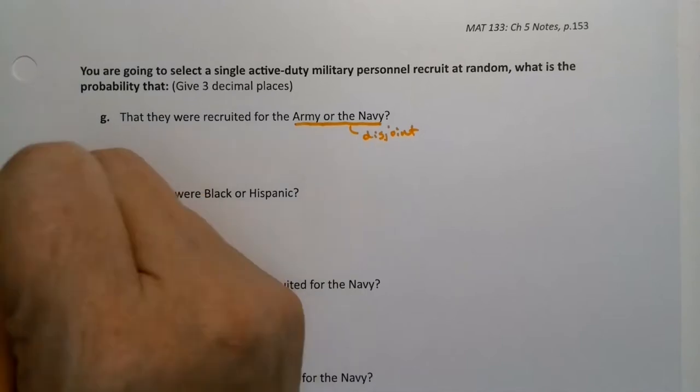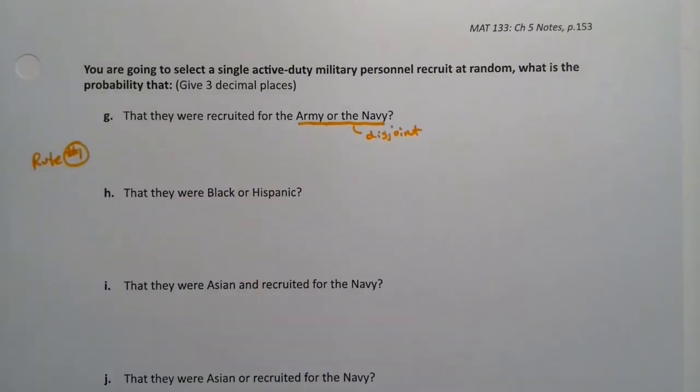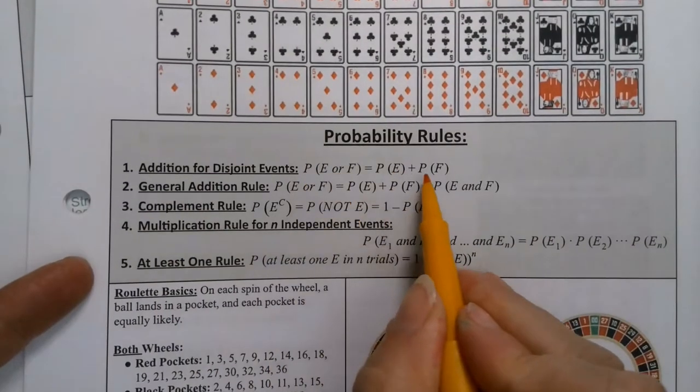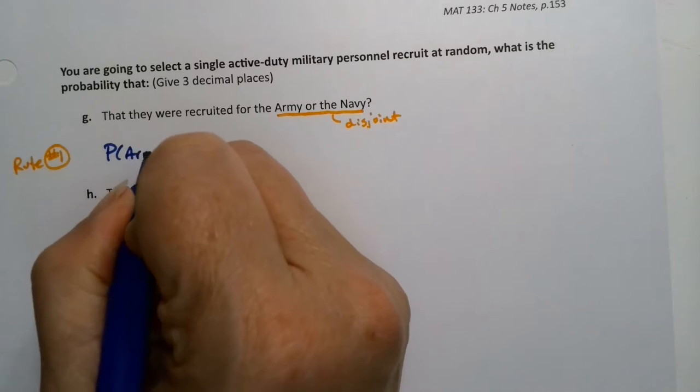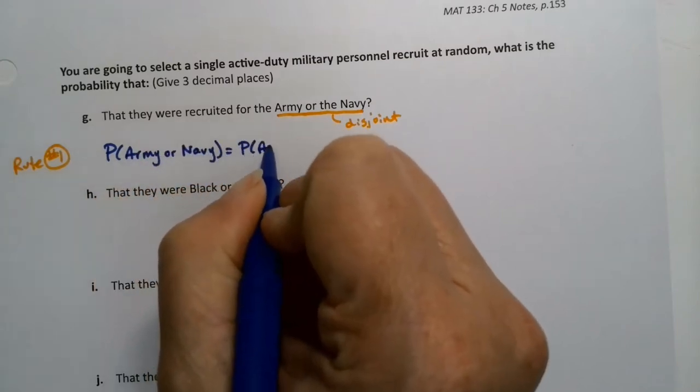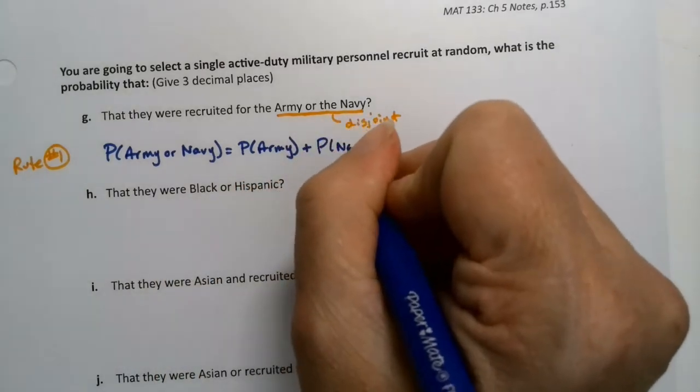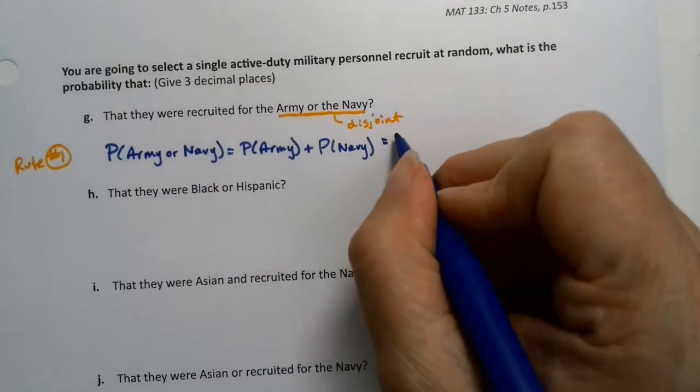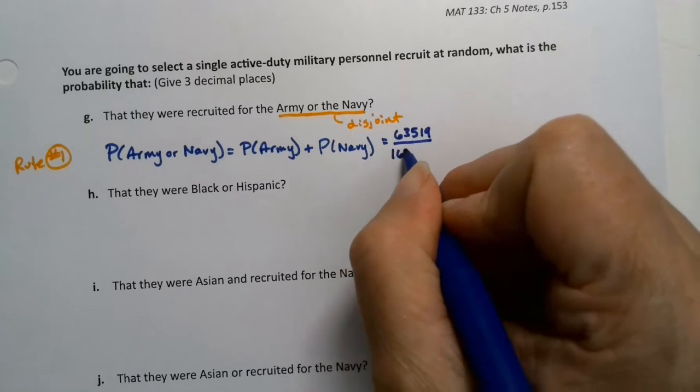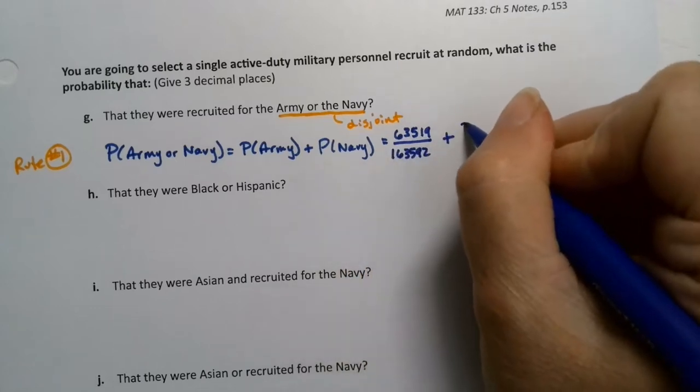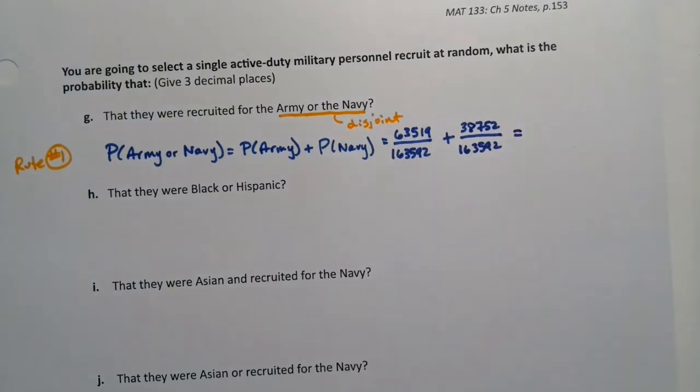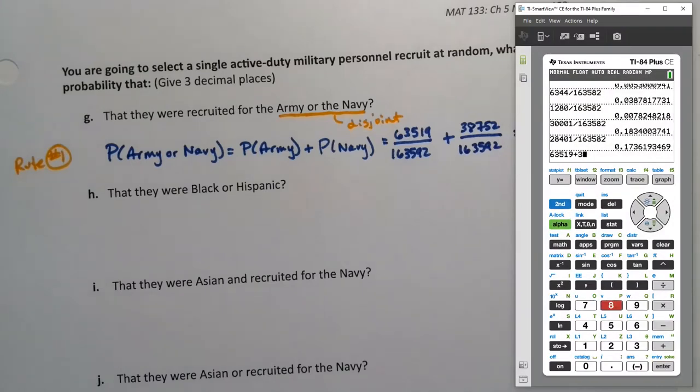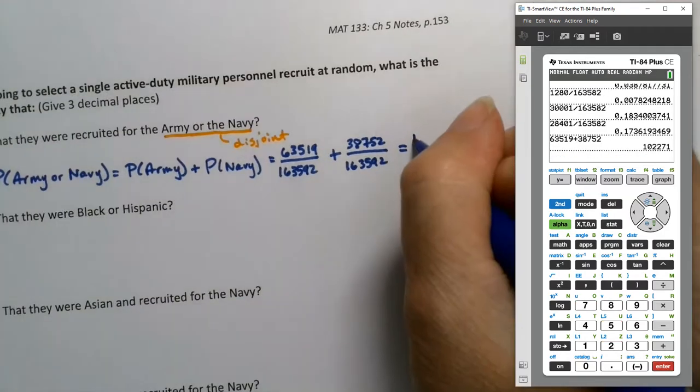So that means that if we want the probability of army or navy, we're going to have to add. Right? So we're going to use rule number one where we just add the probabilities, right? When they're disjoint events, if you want the probability of one or the other, you add them up. Well, number one. So I'm going to find the probability of, write this out. The probability of army or navy is the probability of army plus the probability of navy. We just add them. Army was 63,519 plus navy was 38,752.